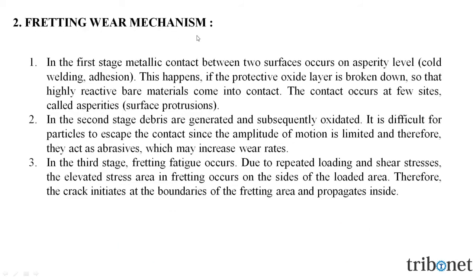Let us understand the fretting wear mechanism. In the first stage, metallic contact between two surfaces occurs on the asperity level — cold welding and adhesion. This happens if the protective oxide layer is broken down so that highly reactive bare materials come into contact. The contact occurs at few sites called asperities or surface protrusions. In the second stage, debris are generated and subsequently oxidized. It is difficult for particles to escape the contact since the amplitude of the motion is limited, and therefore they act as abrasives which may increase wear rates.